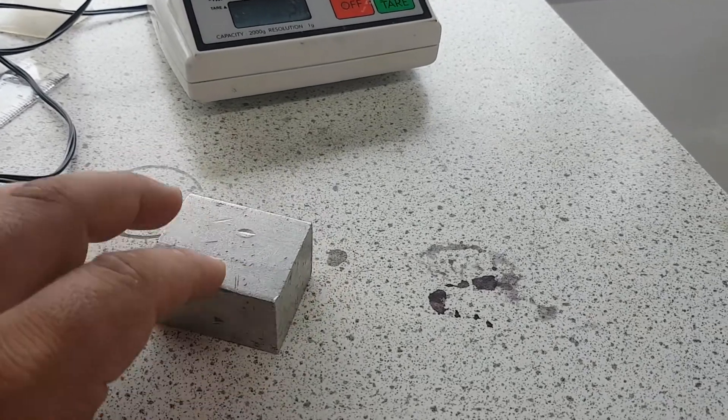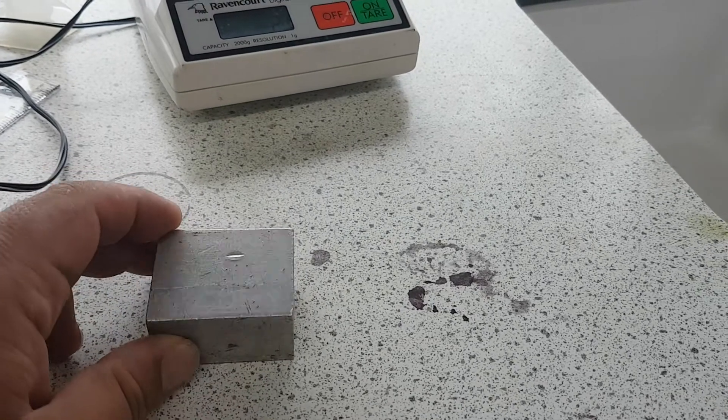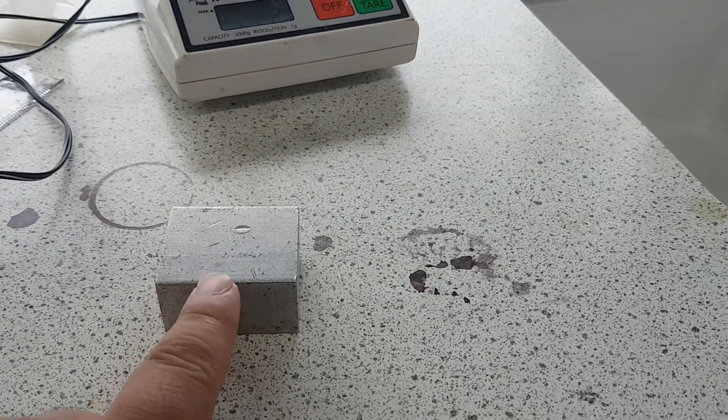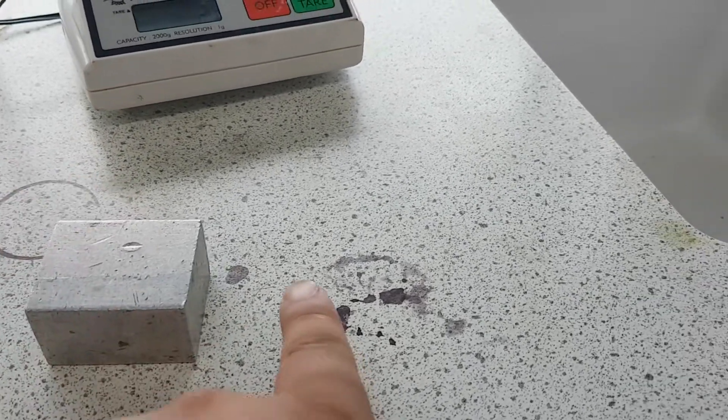Now the first thing you need to do is you need to work out the volume of our cube or cuboid. And to do that, you take the length, measure it by the height and measure the width.